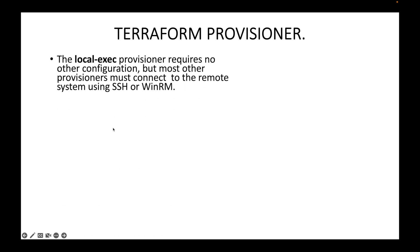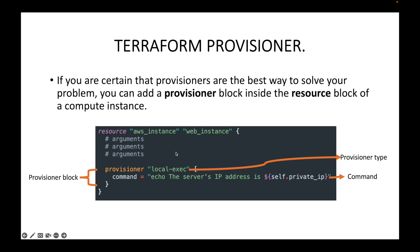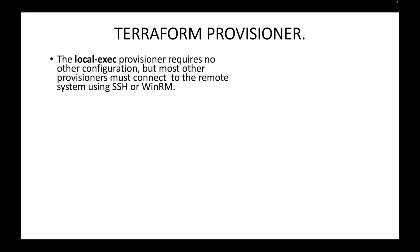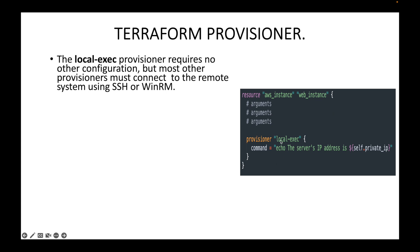The local-exec provisioner requires no other configuration, but most other provisioners must connect to the remote system using SSH or WinRM. Depending on the provisioner type you are using, you may need to provide additional configuration. For example, if you're using the file provisioner or remote-exec, you'll also need to provide connection information because Terraform needs to establish connectivity to the remote resources. With local-exec, no additional configuration is needed since we are executing on the local machine.